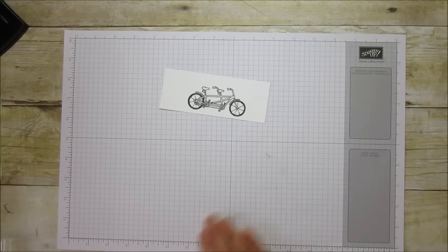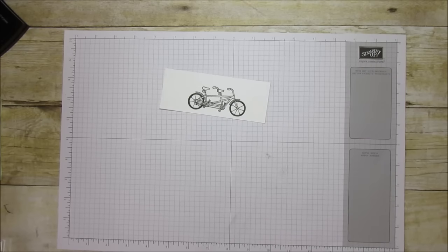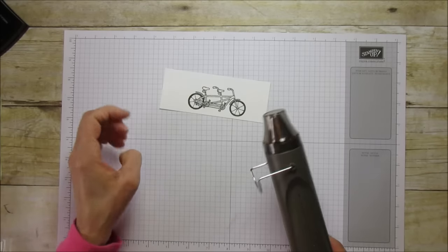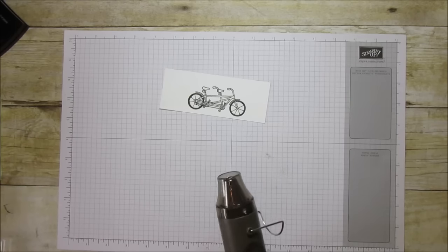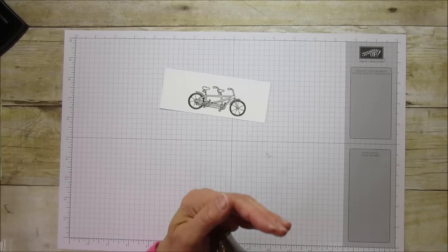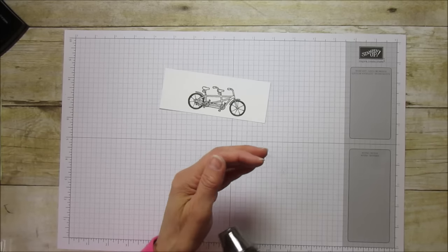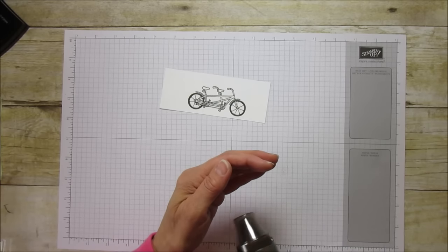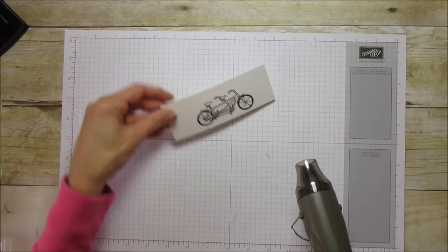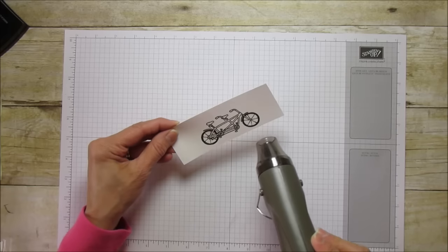This is our Stampin' Up heat tool. It's going to set the embossing on here. What I usually do is turn it on - I know the noise is a little annoying and it gets really hot pretty quick - and then we're going to move it around on the paper.